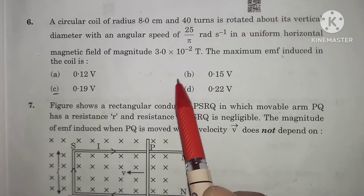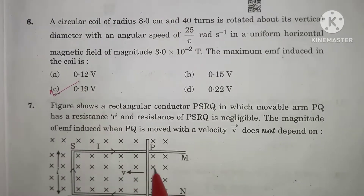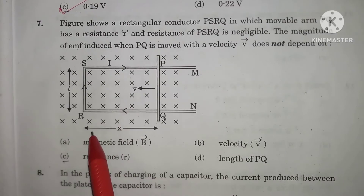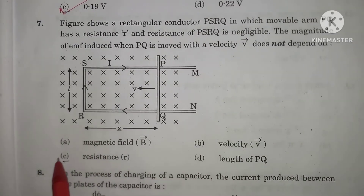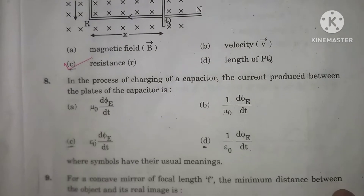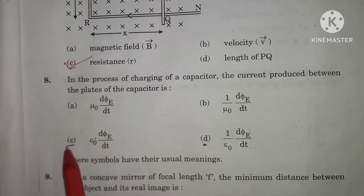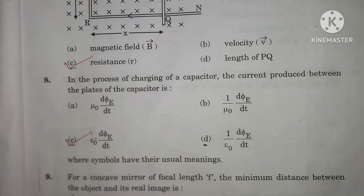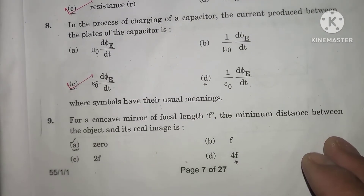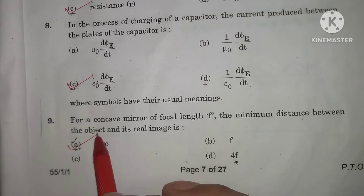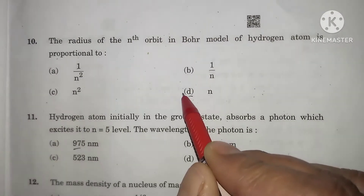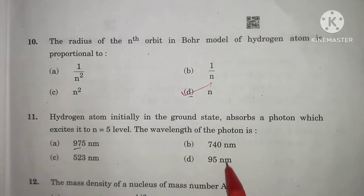Question number 6, C is the correct option. Question number 7, also C is the correct option. Question number 8, option C is the correct option. Question number 9, option A is the correct option. Question number 10, option D is the correct option.